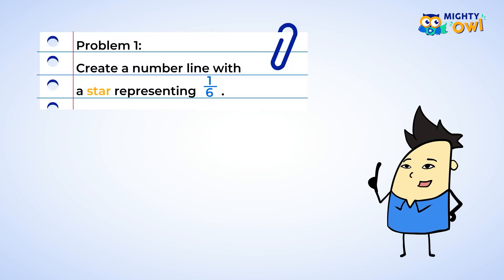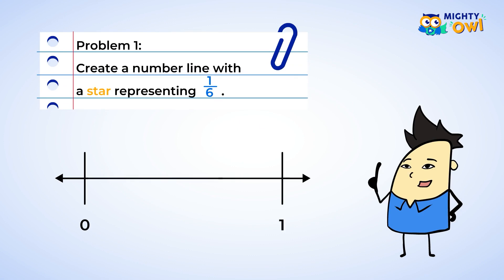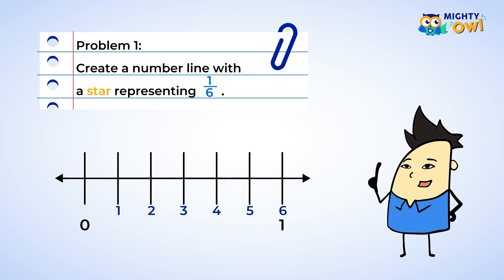We have to put a star at 1 sixth on a number line. Let's start by creating the number line. We have a horizontal line and we will mark 0 and 1. Now look at the denominator, the lower number — it's a 6. This means we need to divide the line into 6 equal parts. Double check your work to make sure you have 6 equal pieces. Now look at the numerator, or the top number — it's a 1. So we need to move 1 tick mark over. Now let's put a star there and let's make it gold to match the great work you did.